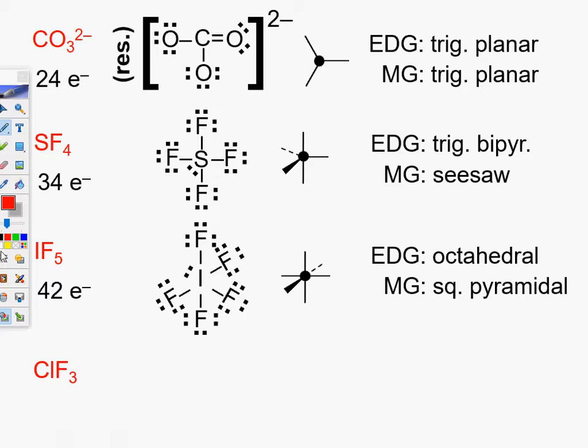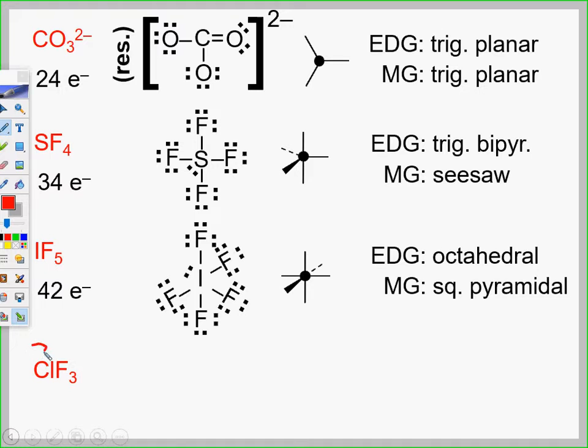So again, let me go over this. If you have this, you have 7 plus 21 is 28. I take my Cl, I'm going to put it in the middle, F, F, F. I'm going to use 24. I have two lone pairs left. I have AX3E2.